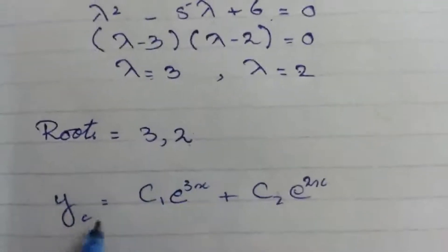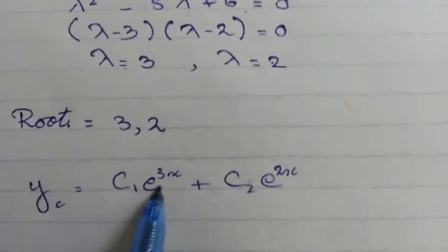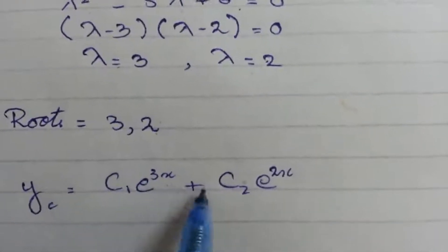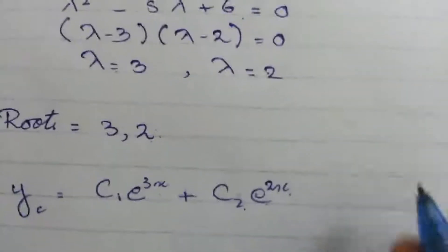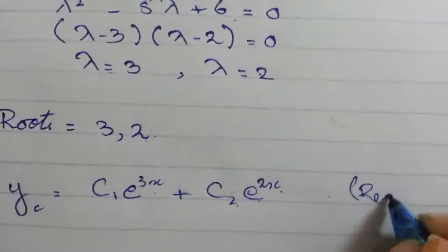Now how to write yc? yc will be c₁e^(3x) plus c₂e^(2x). This is the case for real roots but also unique and distinct when they both are different.